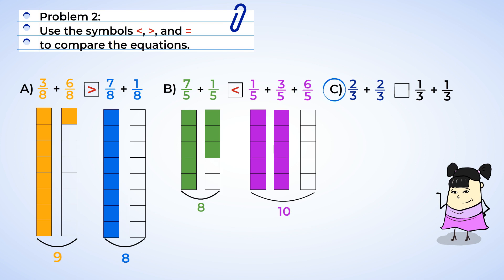Moving on to the last part, part C. Let's try this one without drawing the rectangles — we can try looking at the numerators only. Two plus two is four, so on the left we have four-thirds. And on the right we have one plus one, which equals two, so one-third plus one-third is two-thirds. Four is greater than two, so two-thirds plus two-thirds must be greater than one-third plus one-third. I love finding shortcuts.